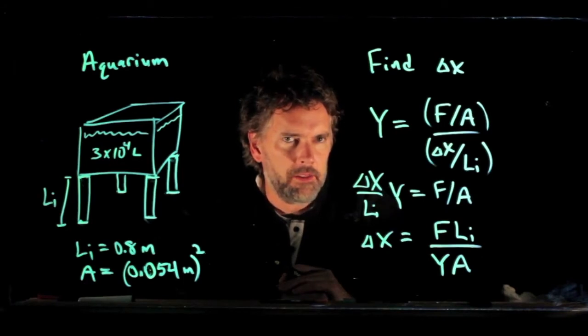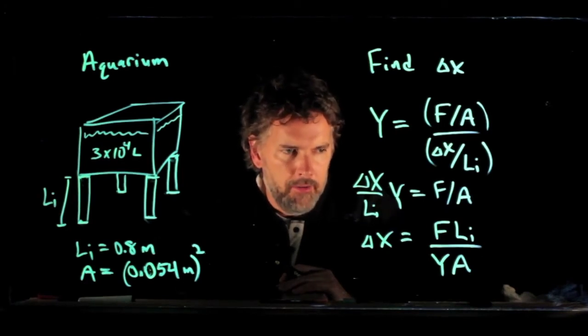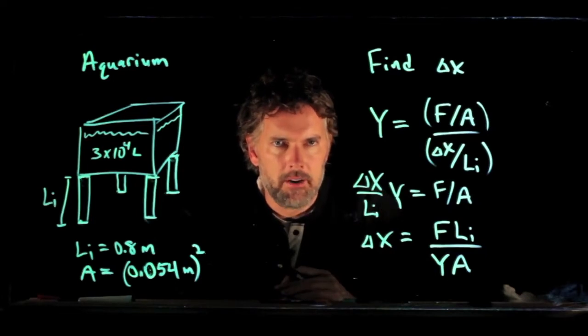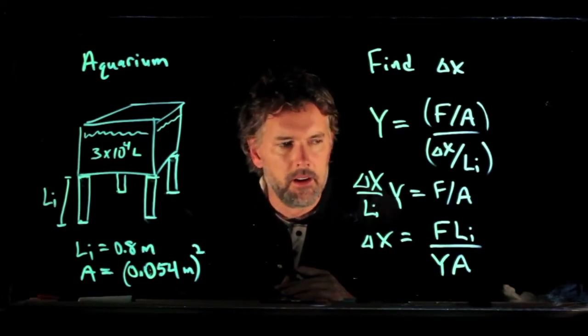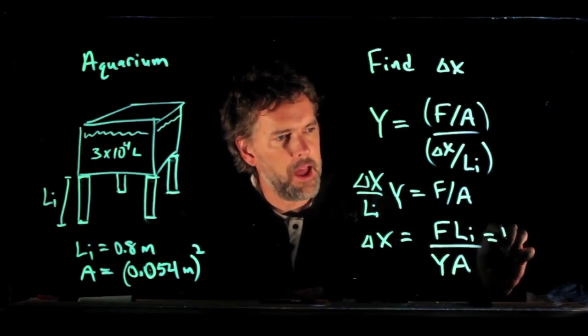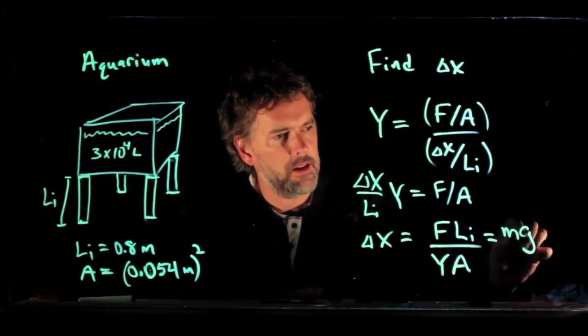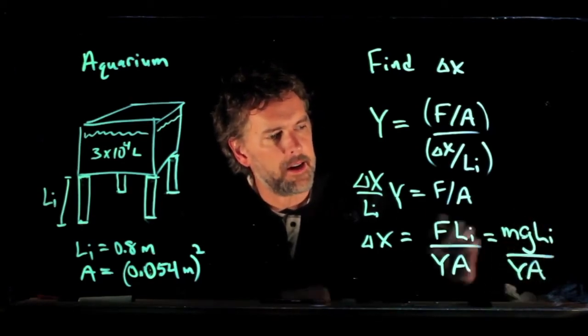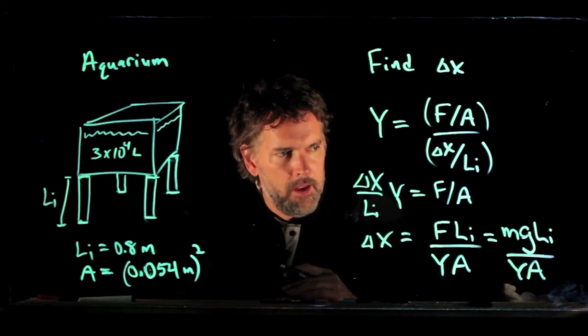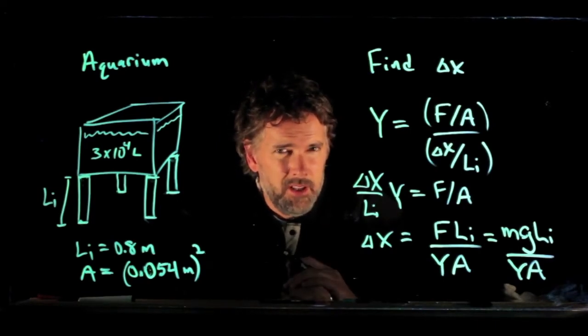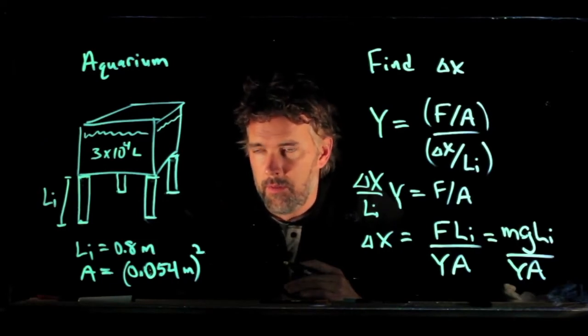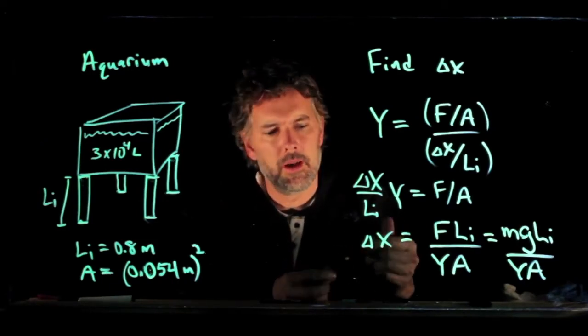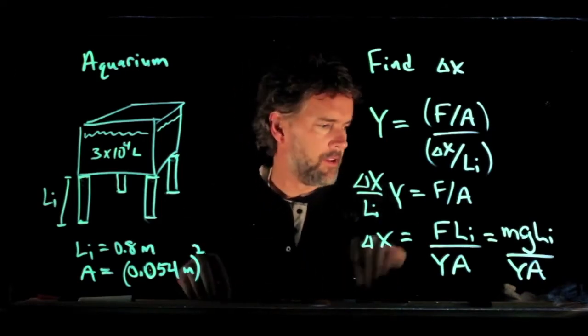What is F? F is how hard is the water pushing down on those posts? Well, that's just the weight of the water. So that becomes mg times Li, all divided by Y times A. And we don't really know the mass yet, but we do know the volume of the water. So we should be able to calculate the mass. Let's see how to do that.